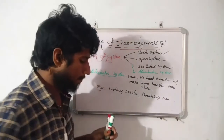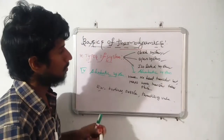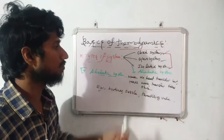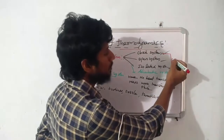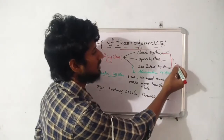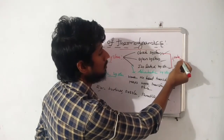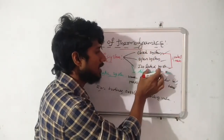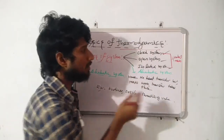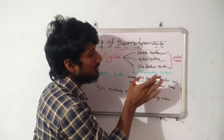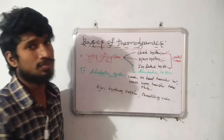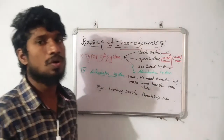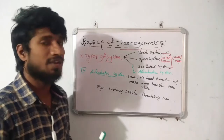If you find out that in the closed system and the isolated system there is no mass transfer, so these types of systems are called control mass systems. In the open system, it is defined as a control volume system. These are the different types of systems.